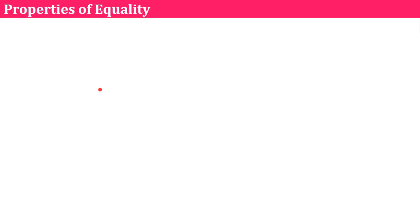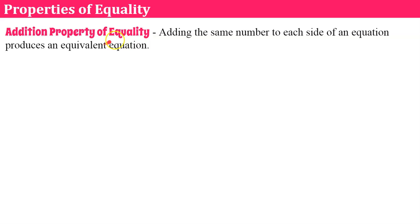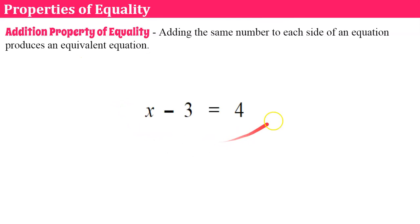Let's talk about the properties of equality that are going to help us with inverse operations to solve equations. The addition property of equality states that adding the same number to each side of an equation produces an equivalent equation. What that means is that if you add the same number to each side of an equation — each side of the equal sign — you are not changing the value of the equation because you've kept the balance. You've done the same exact thing to both sides, and in algebra, that works.